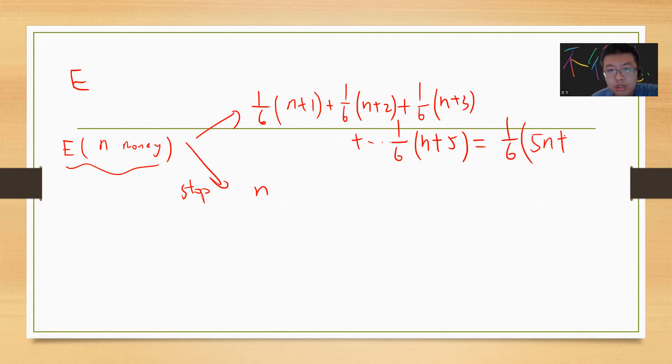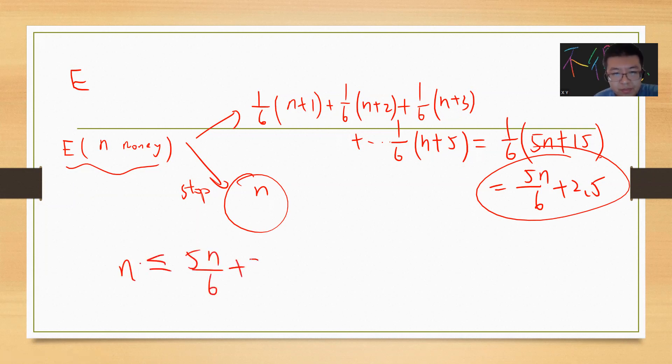This is 5n plus 15, which is 5n/6 + 2.5. You can compare which one is larger. You can solve this inequality and you will get n equals 15.